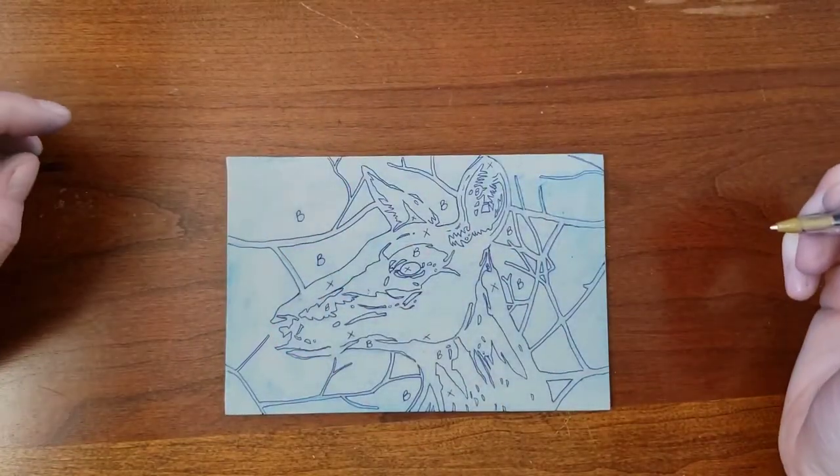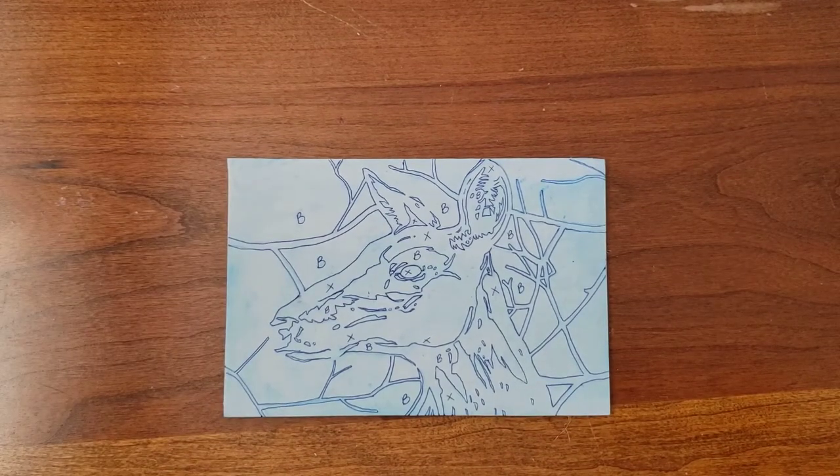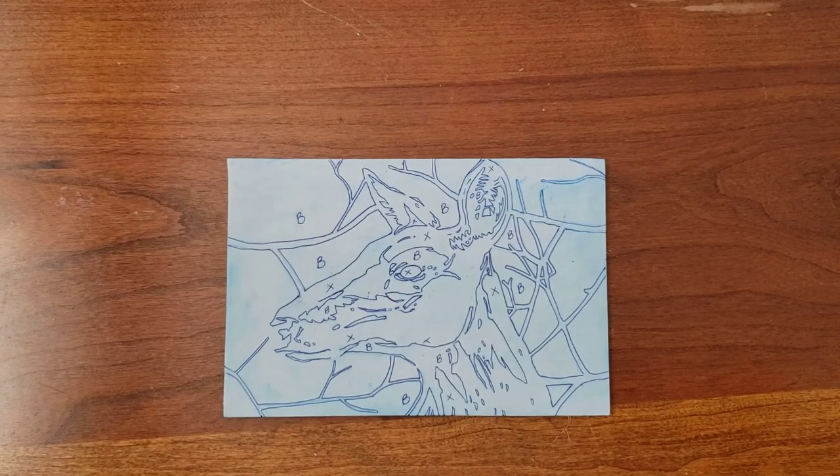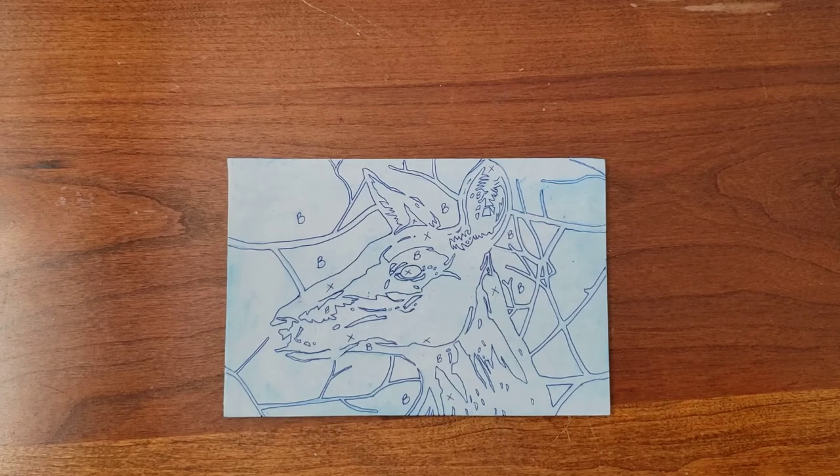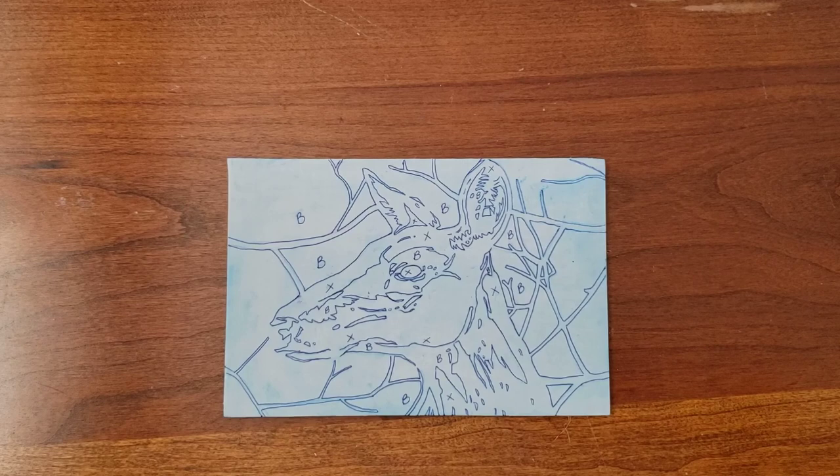Now the block is ready to be cut. If I didn't like the way this turned out, I could take it all off with rubbing alcohol and sand the surface down a little. The block has not yet been changed in a permanent way. If I wanted, I could also go over it with an ink wash so that I can better see where I'm cutting later on.